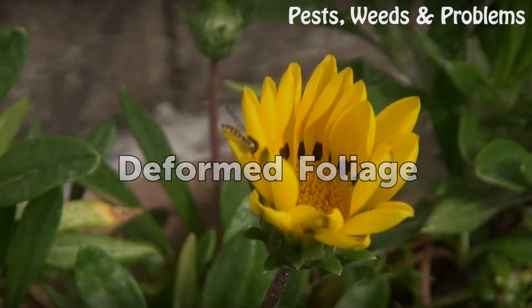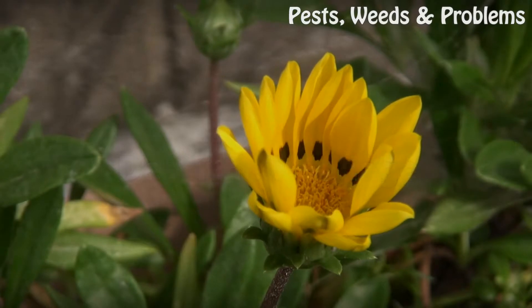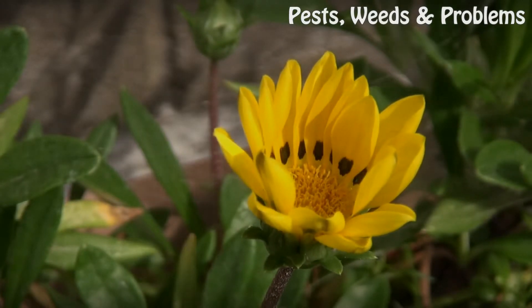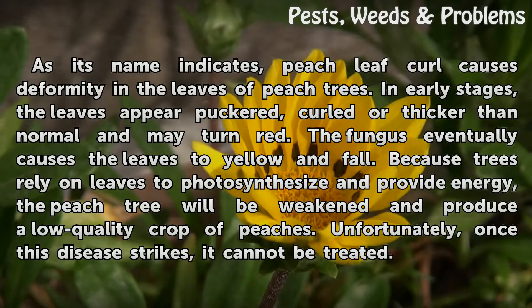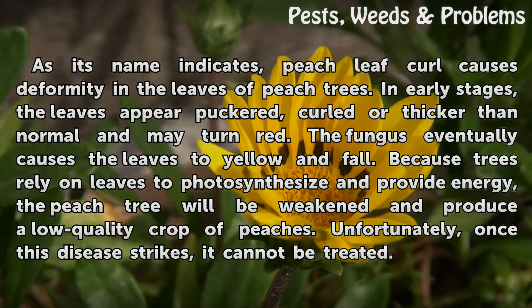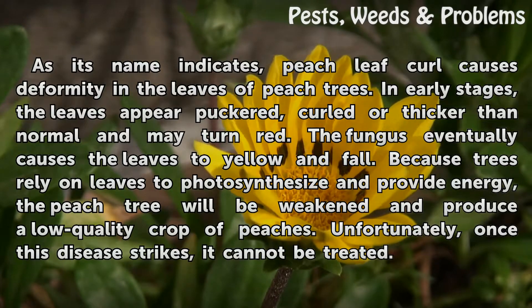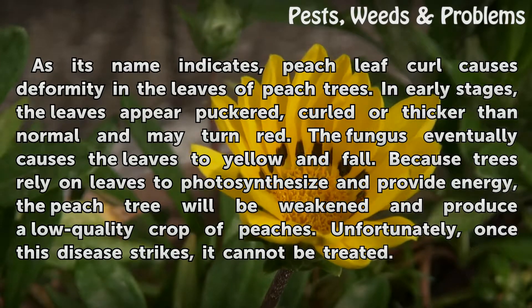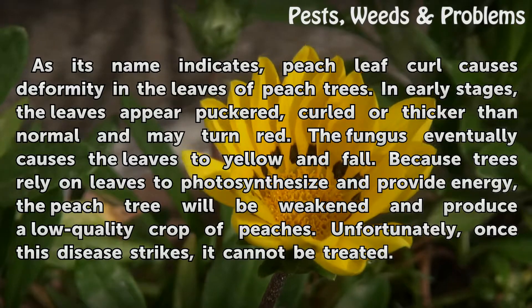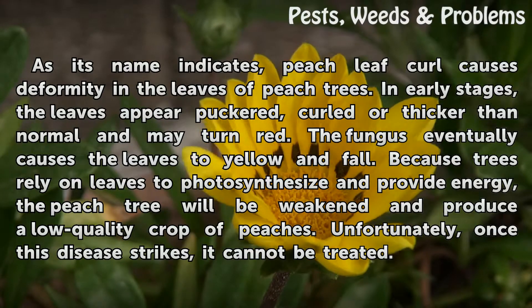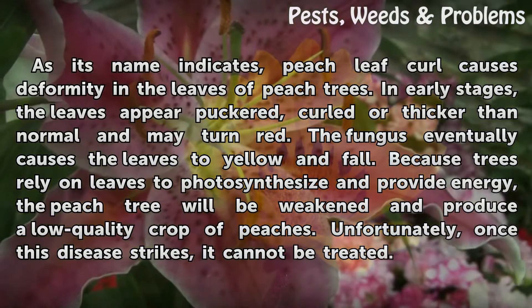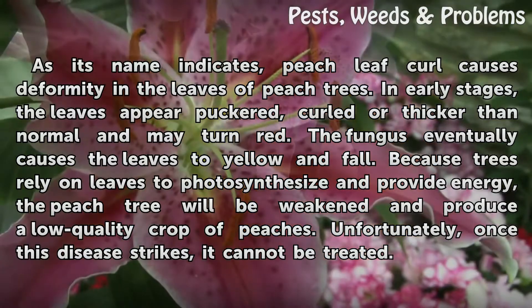Deformed Foliage. As its name indicates, peach leaf curl causes deformity in the leaves of peach trees. In early stages, the leaves appear puckered, curled, or thicker than normal and may turn red. The fungus eventually causes the leaves to yellow and fall.